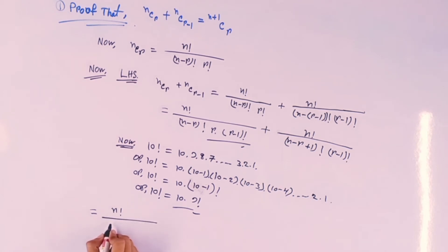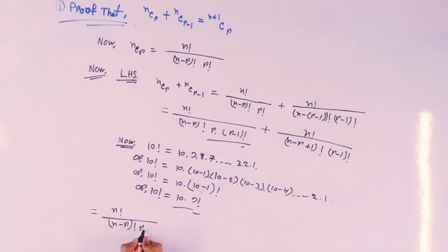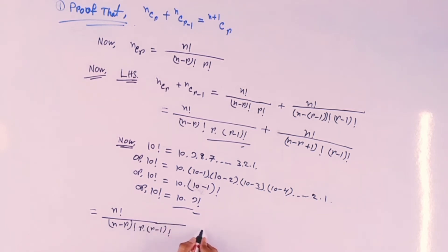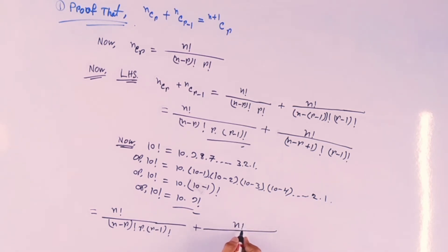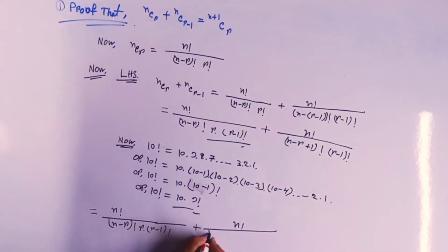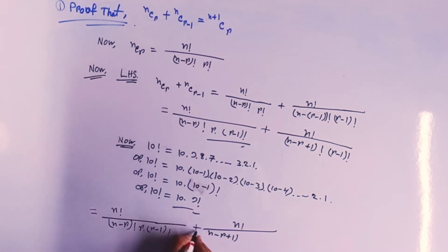So that equals to n factorial by (n minus r) factorial times r times (r minus 1) factorial, plus n factorial by (n minus r plus 1) factorial times (r minus 1) factorial.